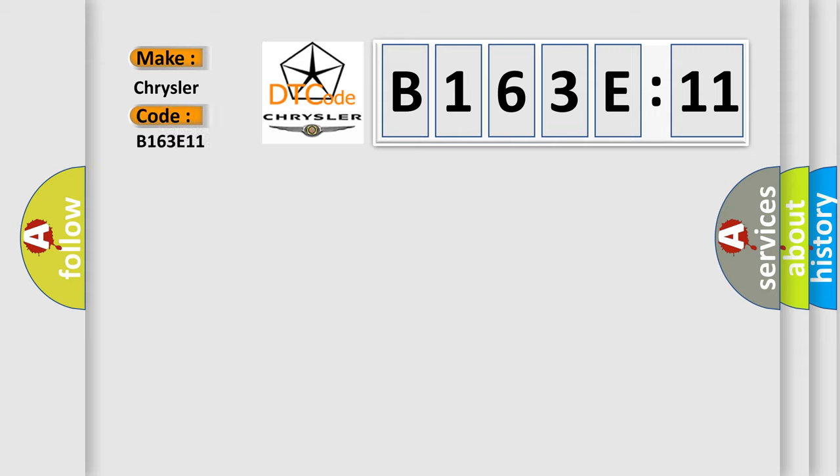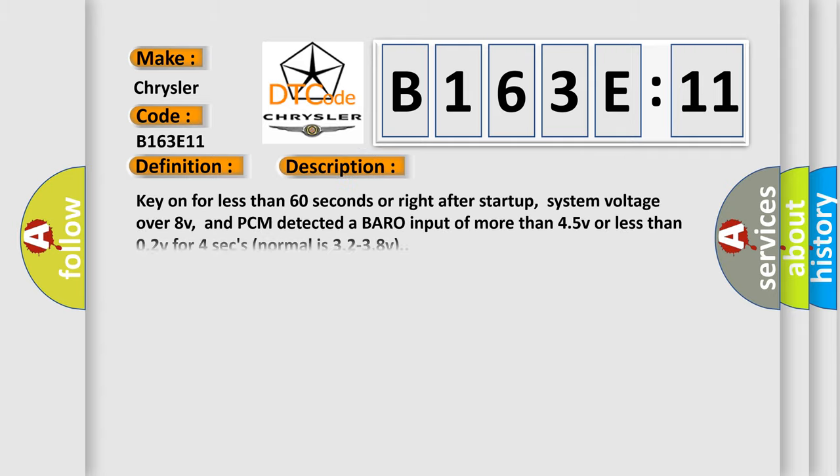The basic definition is barometric pressure sensor circuit. And now this is a short description of this DTC code. Key on for less than 60 seconds or right after start-up, system voltage over 8V, and PCM detected a barrow input of more than 45V or less than 02V for 4 seconds. Normal is 32 to 38V.